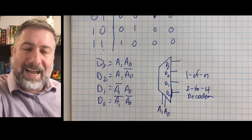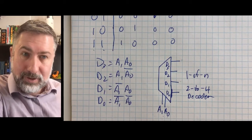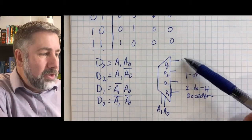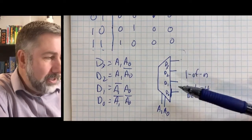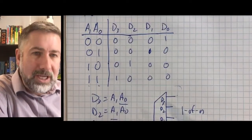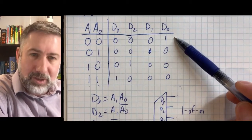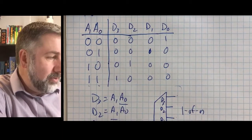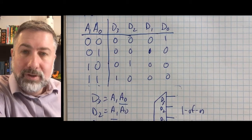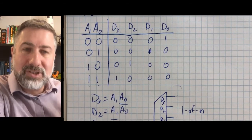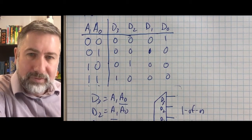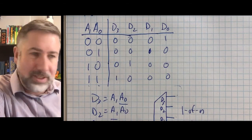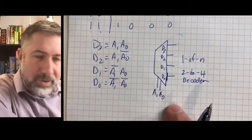So we're going to add another input called an enable. This is for when we don't want any of these outputs on. With this setup, we can only ever have one of the outputs on at the same time. If we add an enable bit, when the enable is 0, everything is off. When enable is 1, whichever bit we activate turns on.